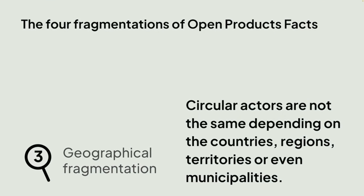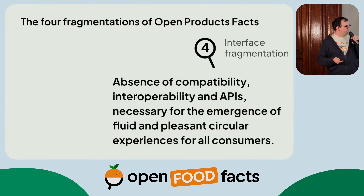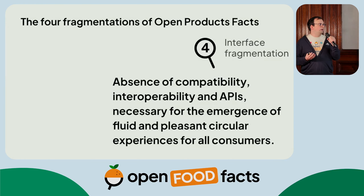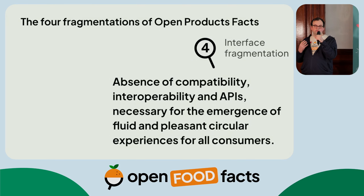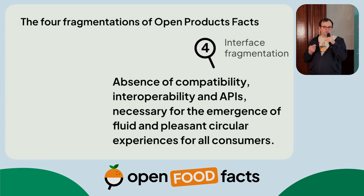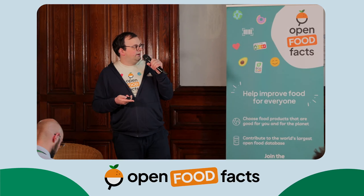The third fragmentation is geographical. Basically, the circular actors are not the same in France, in the UK. And even within France, you will not typically have the same recycling community centers in every place, in every territory. And the fourth is an interface fragmentation. There's no interoperability, no single place where you can basically create a relationship with the objects that surround you. So it's not a very pleasant experience as a person who owns objects. You usually have this big box in your home with all the manuals or you throw them away. And basically, it's a lost opportunity.